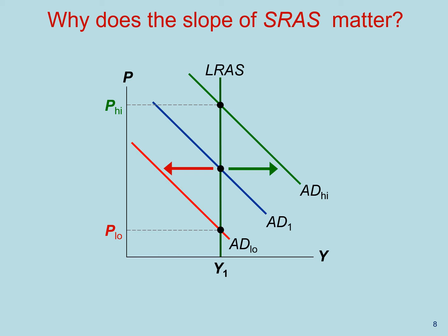If the aggregate supply curve was to be vertical, fluctuations in aggregate demand would not cause fluctuations in output and employment, as clearly graphed below.